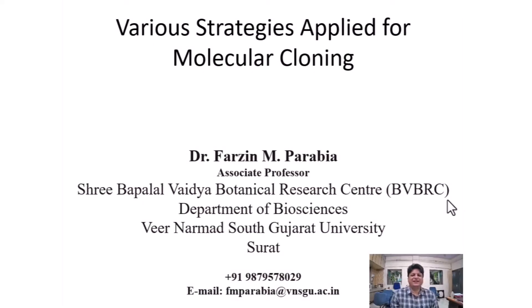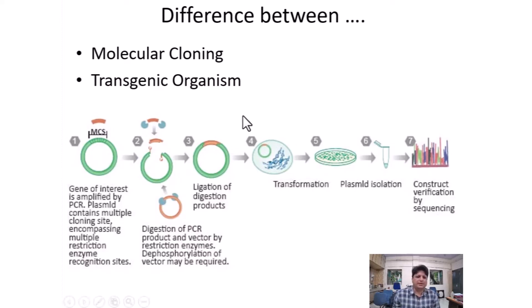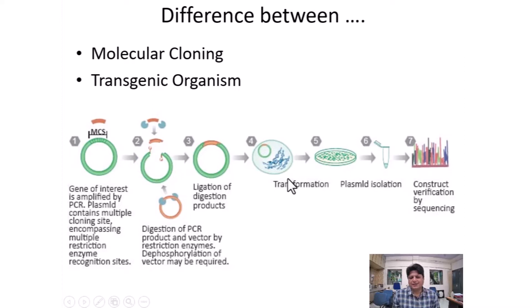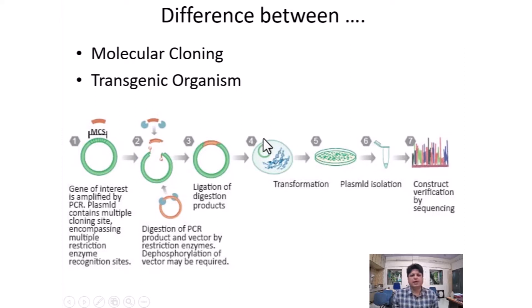Hello, myself is a person for Abya and I am going to take a lecture on various strategies applied for molecular cloning. In molecular cloning there are two components: one is a PCR product and second is a cloning vector. We insert the PCR product into the cloning vector through restriction digestion and ligation, then insert the vector into bacterial cell through transformation.